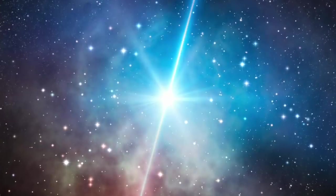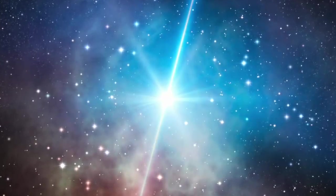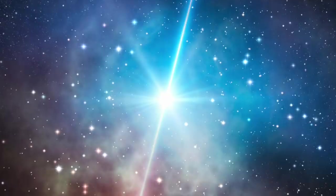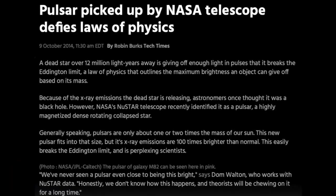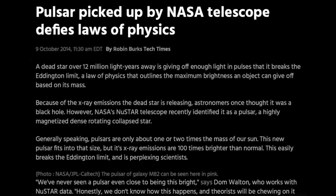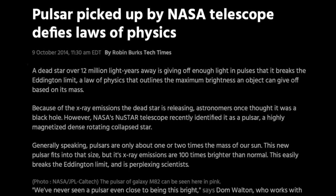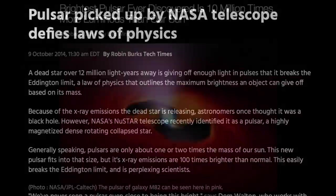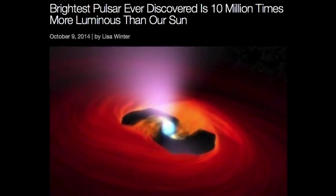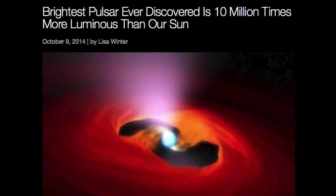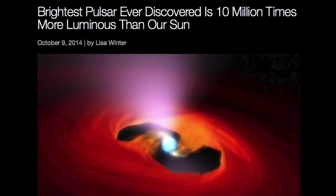In several Space News episodes, we have reported on discoveries which challenge the very underpinnings of the neutron star hypothesis. This includes pulsars whose apparent brightness exponentially exceeds their absolute theoretical limits. In 2014, we reported on the discovery of a so-called neutron star that appeared to shine with the brightness of 10 million suns.